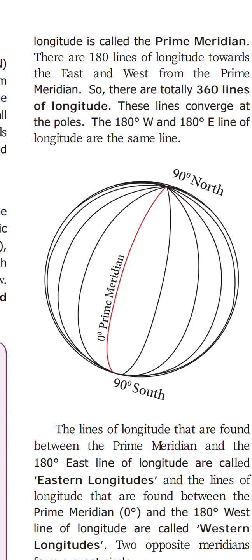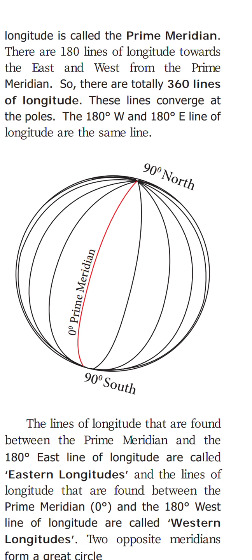These lines converge at the pole. Converge means all these lines join at the pole — at the north pole and south pole.